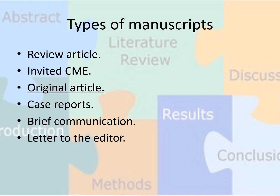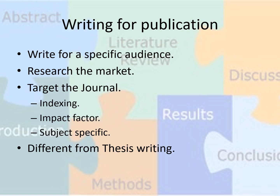Now there are various types of manuscripts. We will be discussing mainly about the original article in the current talk. Before writing for publication, we should know a few things. Firstly, we should write for a specific audience. Being plastic surgeons, we have a wide spectrum of audience — we can write in orthopedic journals, ENT journals, or ophthalmology journals as well. But basically we should target our audience. Then we should research the market. If we are planning to write an article in a specific journal and a similar article on a similar topic has been published in the past issues, then it is very unlikely that our manuscript will be accepted in that journal.